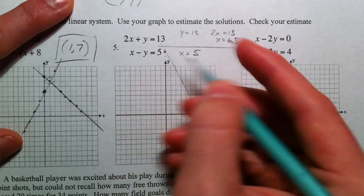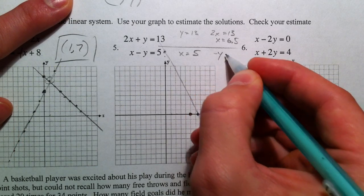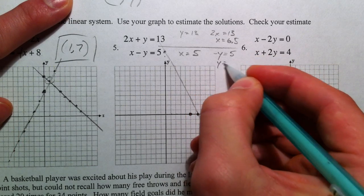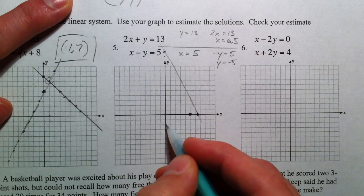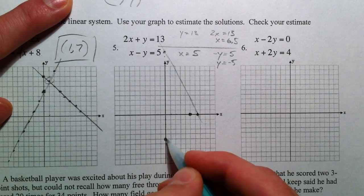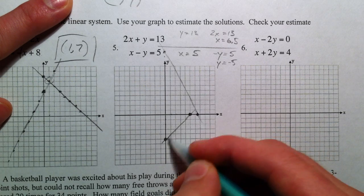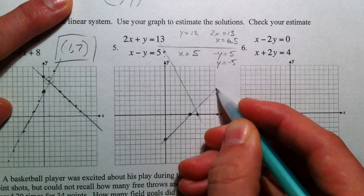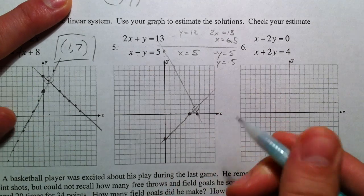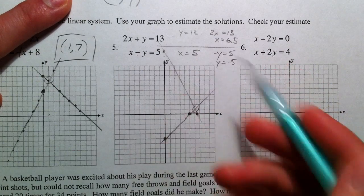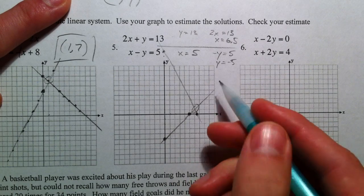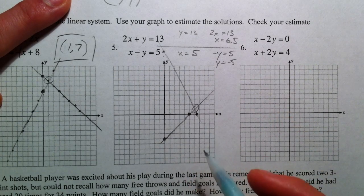And if x equals 0, negative y equals 5, so y equals negative 5. You could also solve for y and get the slope intercept. I just wanted to show you how you could find the x and y intercepts of that.